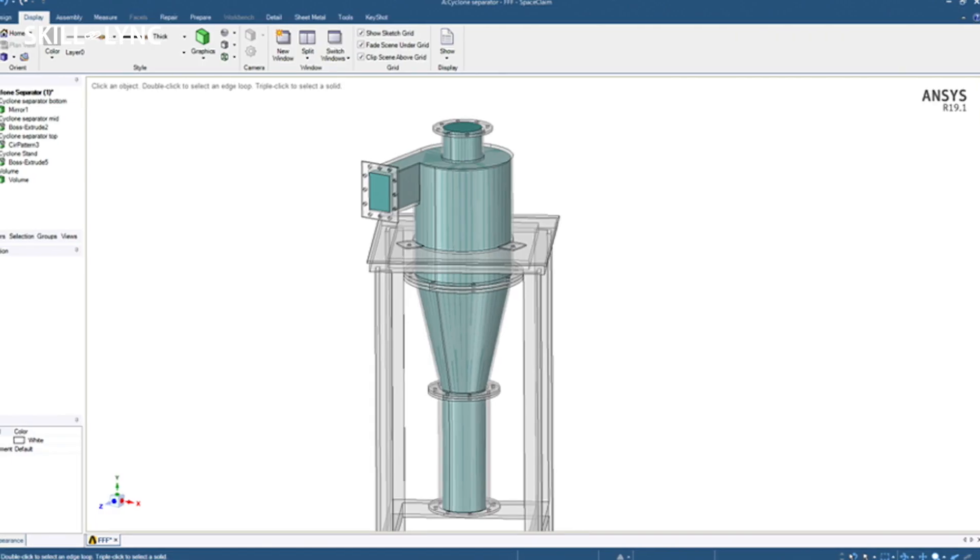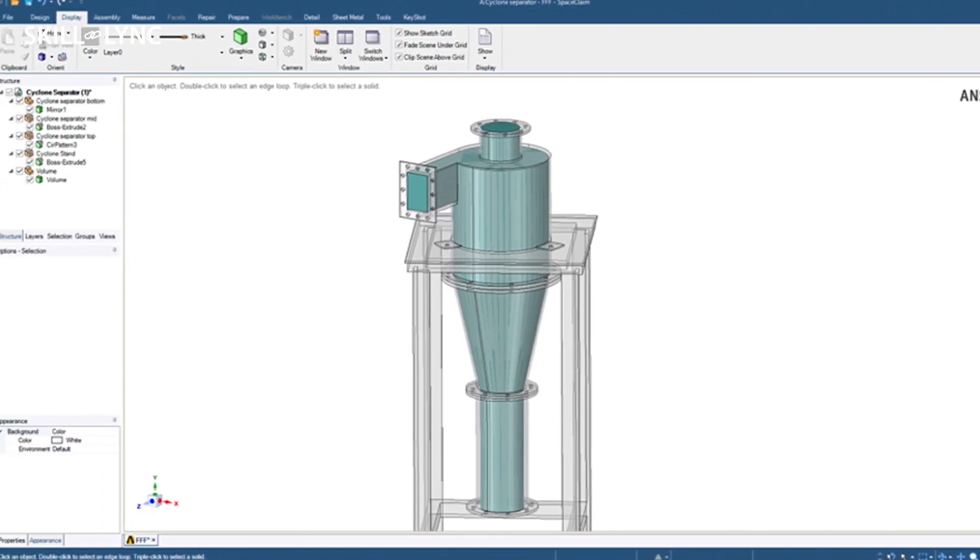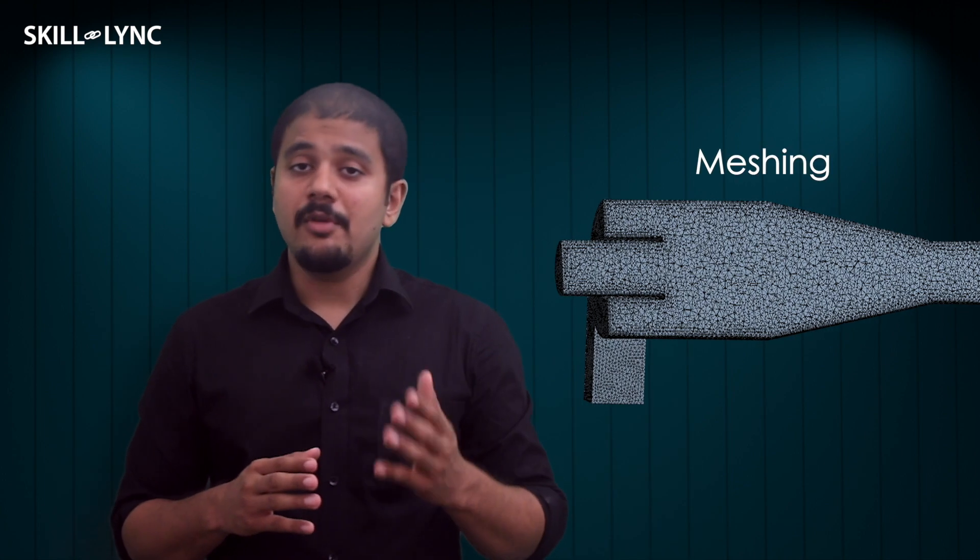All of these simulations were done using ANSYS Fluent. We used ANSYS Space Claim to extract the fluid volume. We have to do this because the original model contains a lot of components that are not in touch with the fluid domain. Once we have done that, we proceed to meshing.